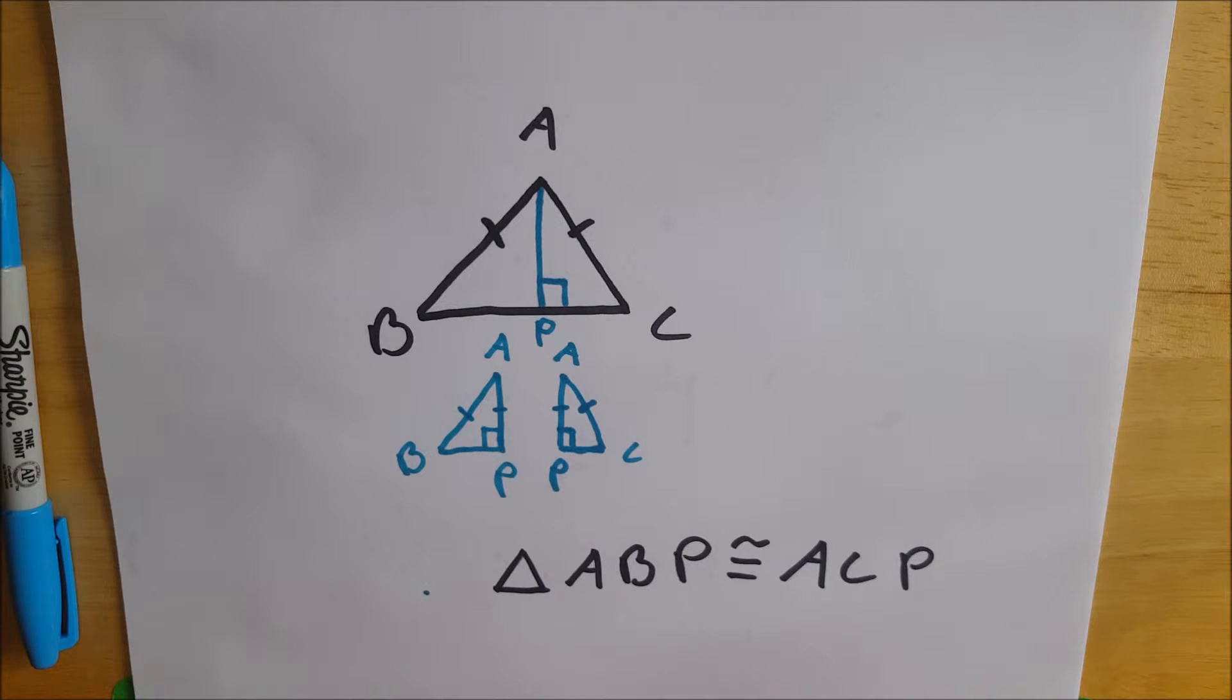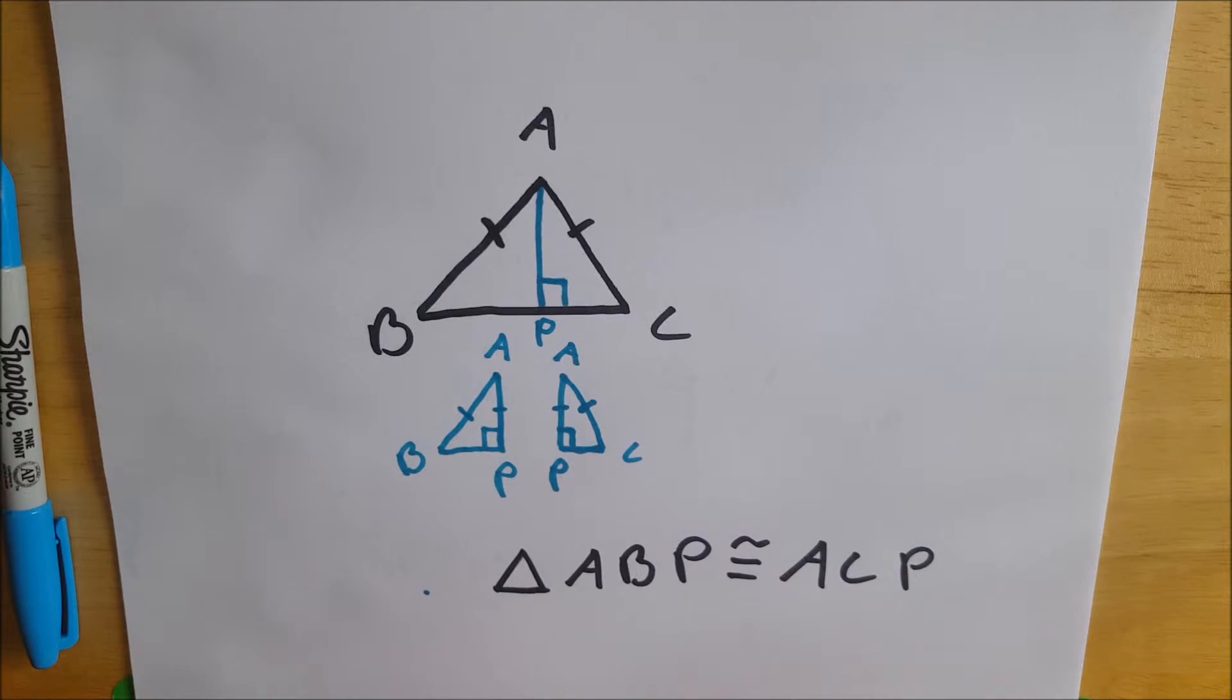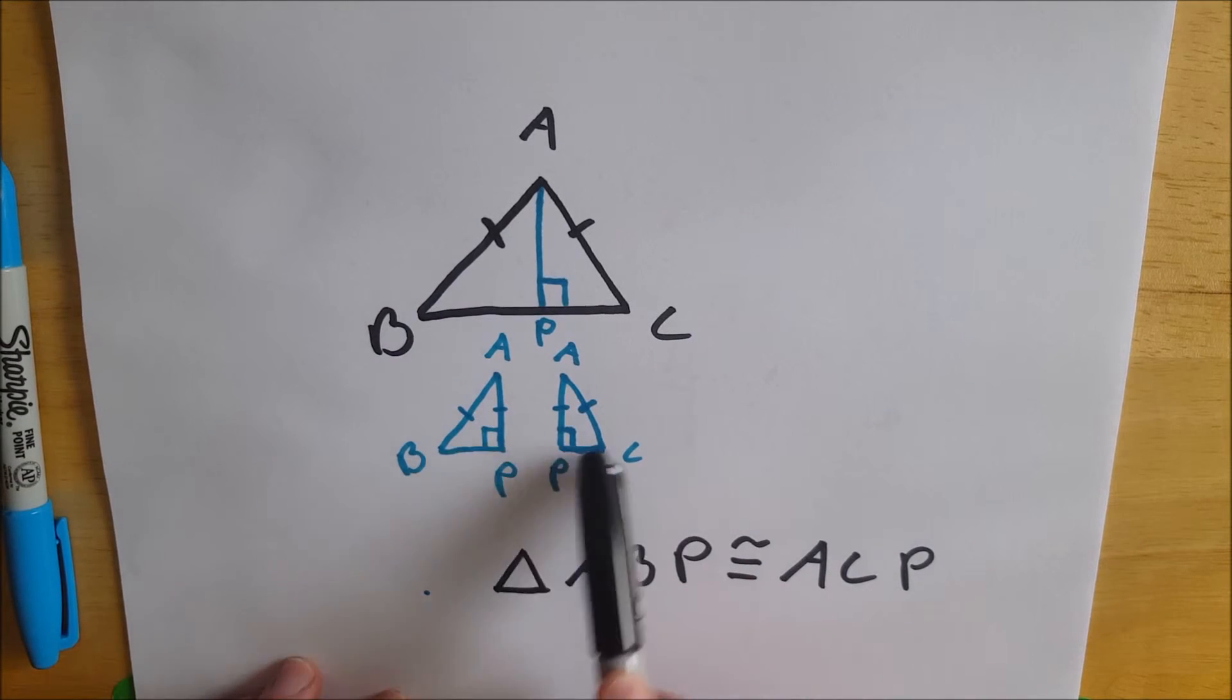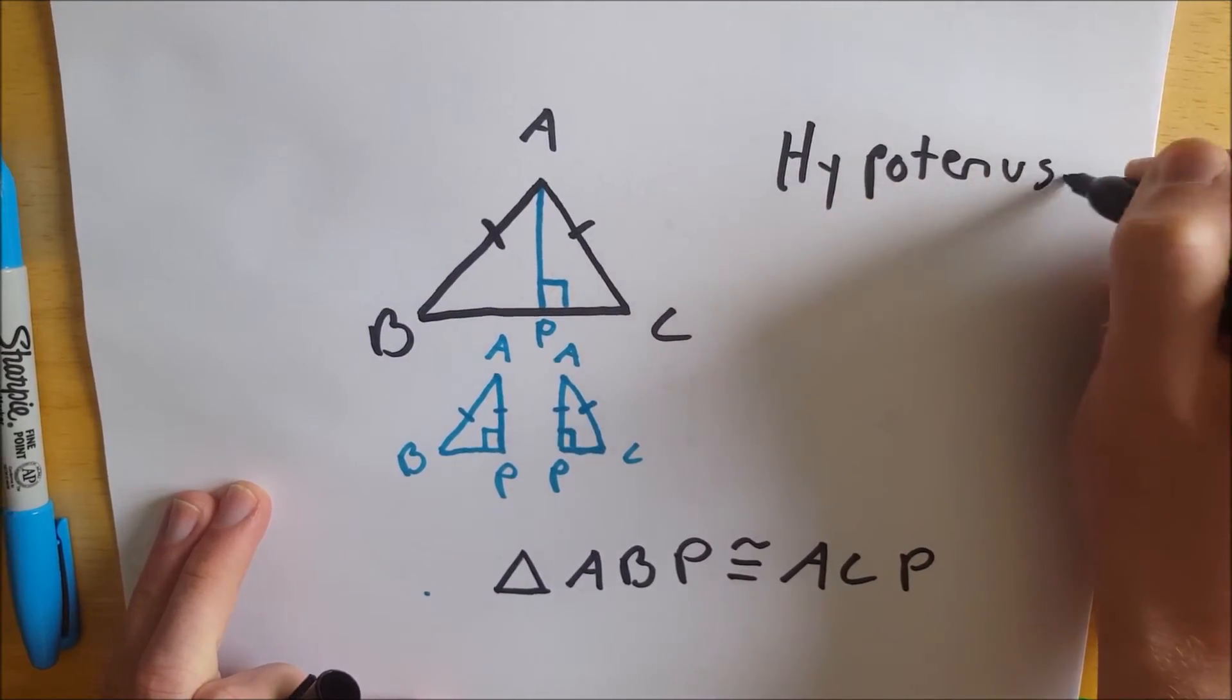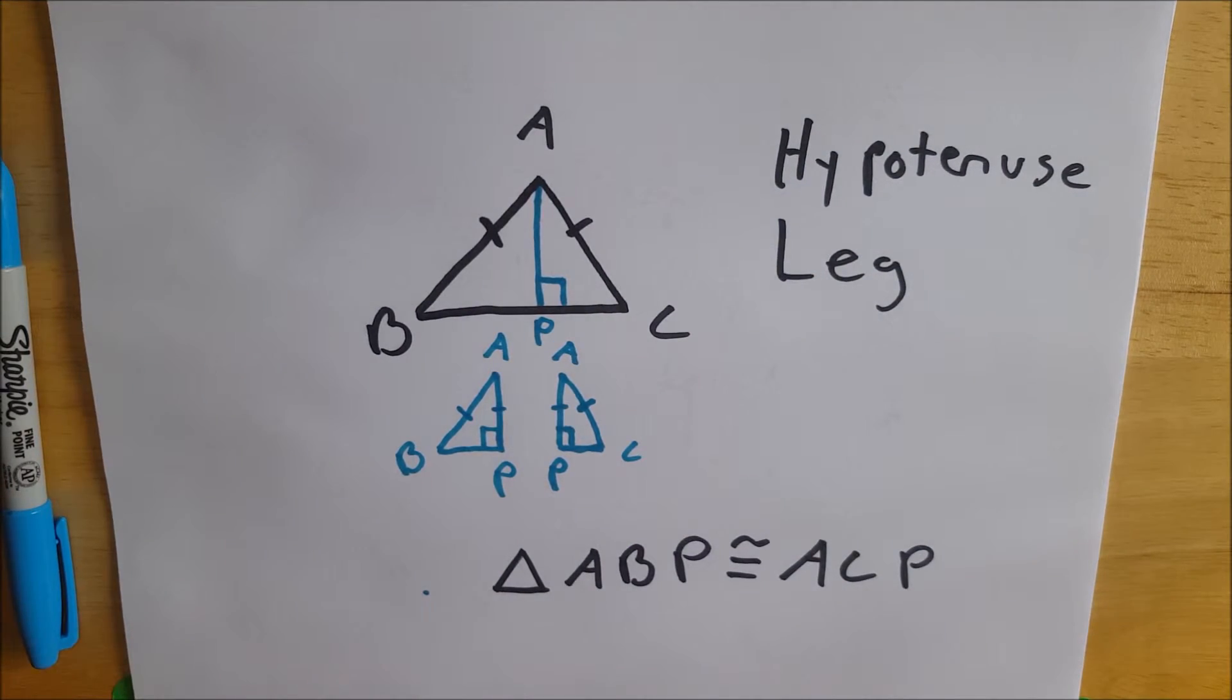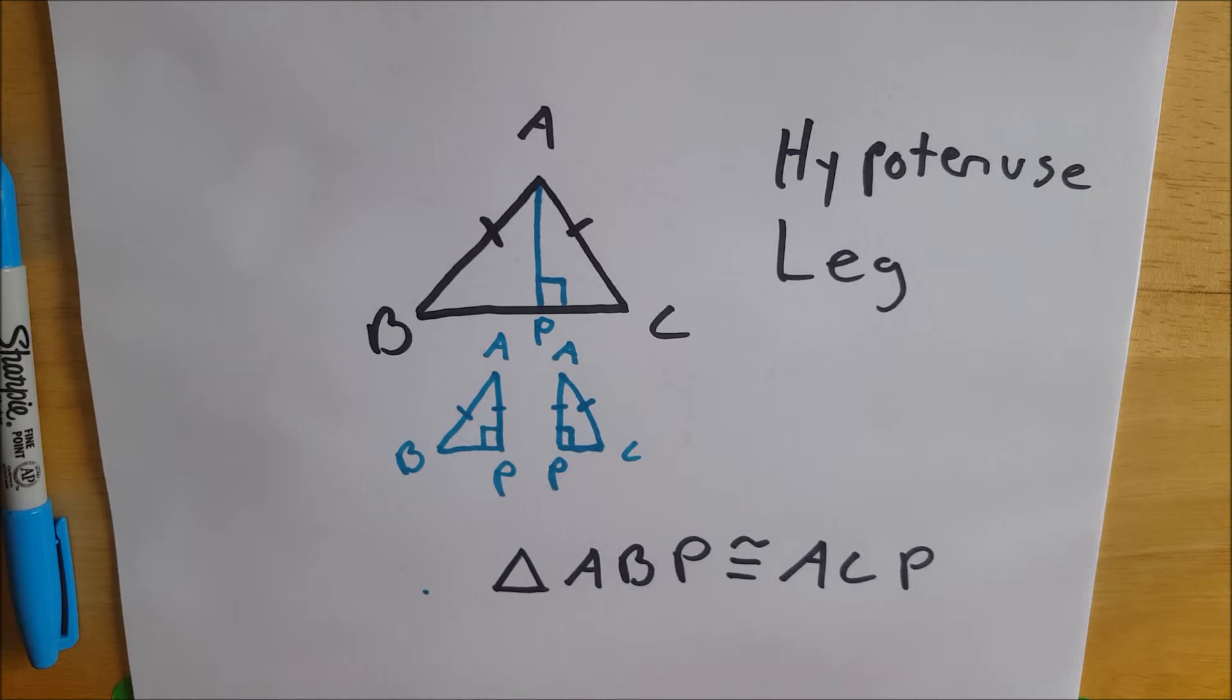So the altitude of an isosceles triangle that has a vertex adjacent to the two congruent sides cuts that isosceles triangle into two congruent right triangles which we see here. And that's by the hypotenuse leg theorem which says that for any two right triangles if they have a congruent hypotenuse and congruent legs, just one set of congruent legs, then the triangles themselves are congruent.